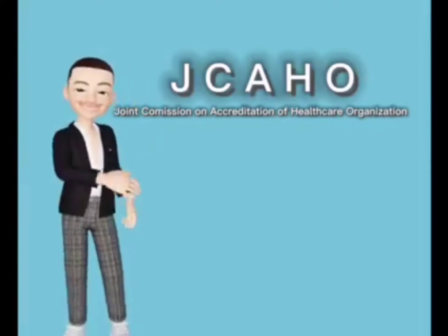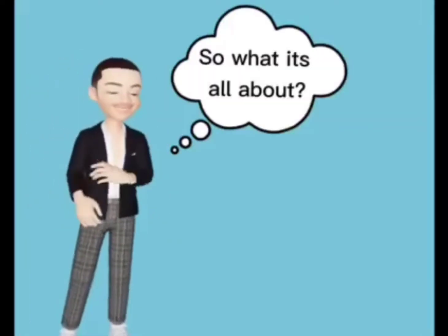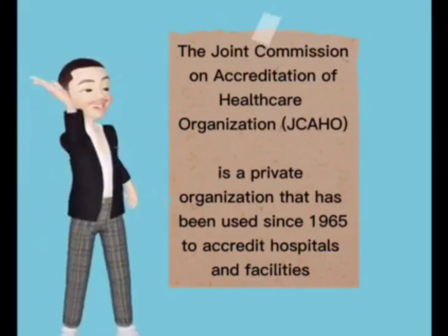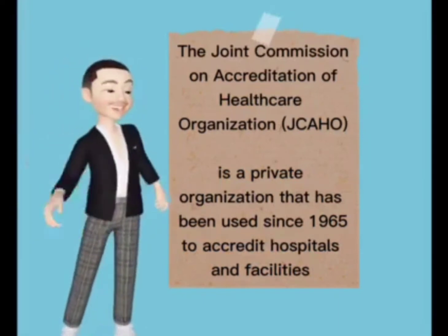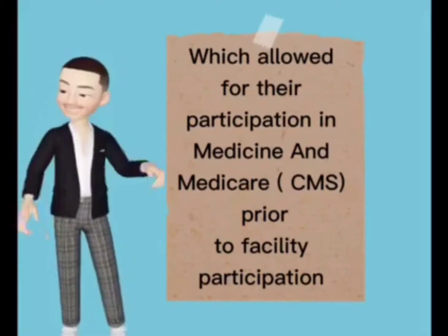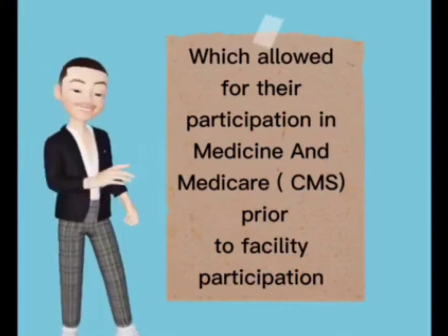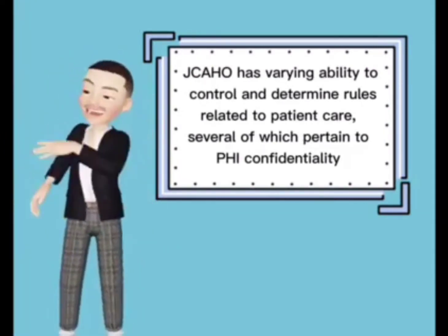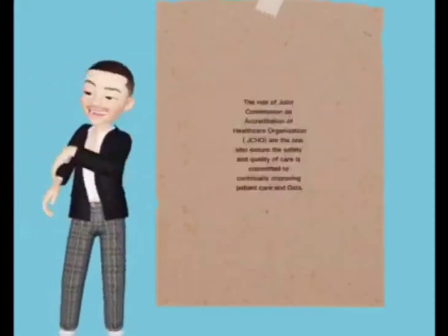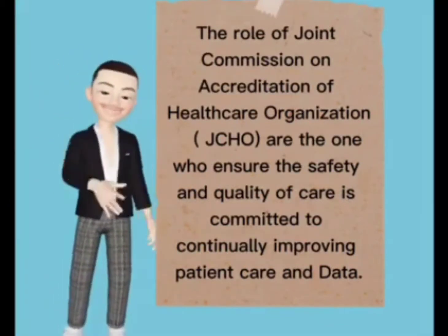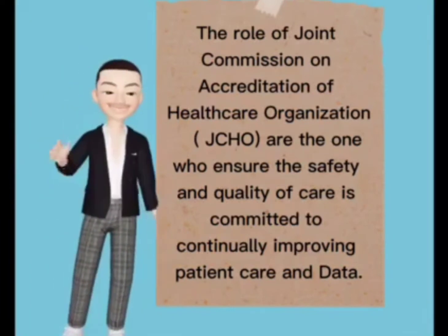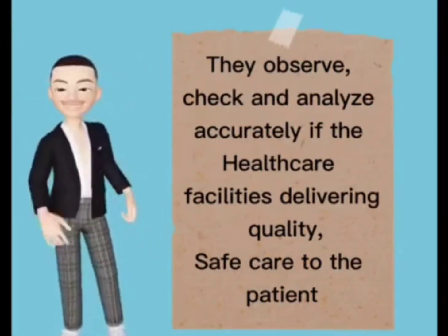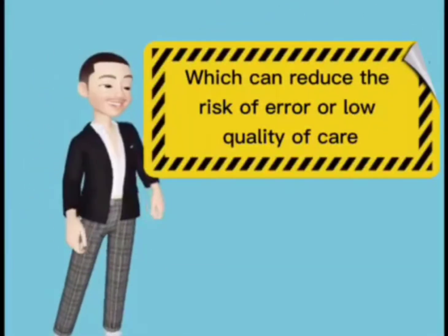Next, the Joint Commission on Accreditation of Healthcare Organization. The Joint Commission is a private organization that has been used since 1965 to accredit hospitals and facilities, which allowed for their participation in Medicaid and Medicare. JCAHO has varying ability to control and determine roles related to patient care, several of which pertain to patient confidentiality. The role of JCAHO is to ensure the safety and quality of care, committed to continually improving patient care and data. They observe, check, and analyze accurately if the healthcare facility is delivering quality, safe care to the patient, which can reduce the risk of error or low quality of care.